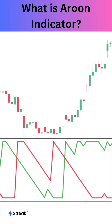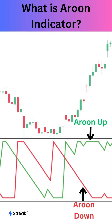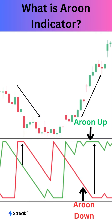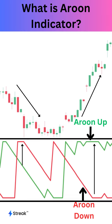It consists of two lines: the Aroon up and Aroon down. When Aroon up is higher than Aroon down, the trend is considered to be bullish, and when Aroon down is higher than Aroon up, the trend is considered to be bearish. The indicator ranges from 0 to 100, where higher values indicate a stronger trend and lower values indicate a weaker trend.